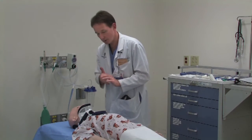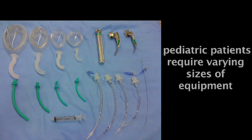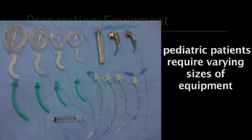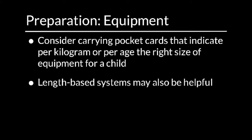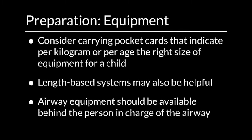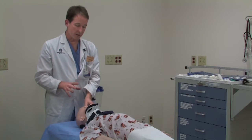Number two is equipment. One of the hassles with pediatric resuscitation is the varied sizes of equipment that children have, especially compared to adults. It's hard to remember the sizes of equipment, and that's why many of us carry pocket cards that tell us per kilo or per age the right size equipment for a child. Another guide can be length-based systems, measuring the length of the child and then having your equipment organized. Since the airway is so important, airway equipment needs to be readily accessible directly behind the person who's in charge of the airway.